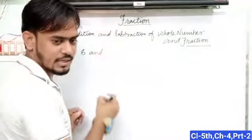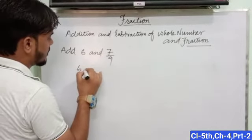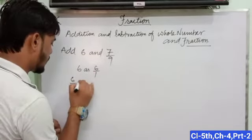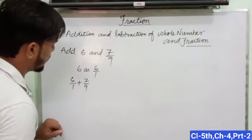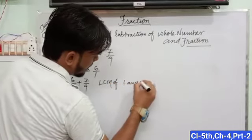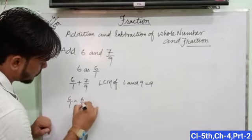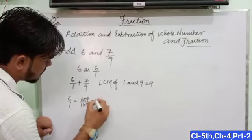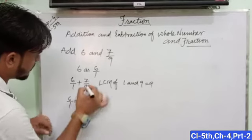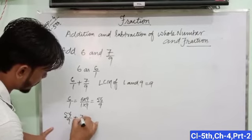Add 6 and 7 upon 9. We can write 6 as 6 upon 1. So we have 6 upon 1 plus 7 upon 9. The LCM of 1 and 9 is equal to 9. So now change 6 upon 1 to denominator 9. So multiply it by 9. 6 times 9 is 54 upon 9. And 7 upon 9 has denominator 9, so we can write 54 upon 9 plus 7 upon 9.